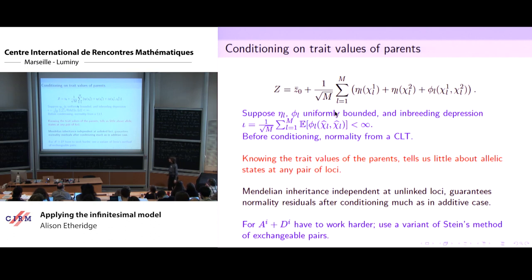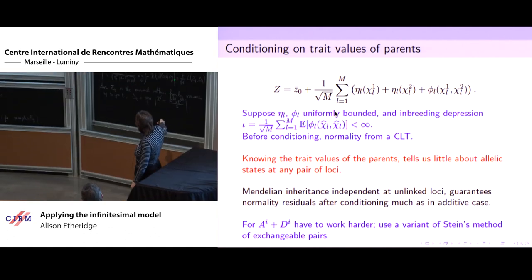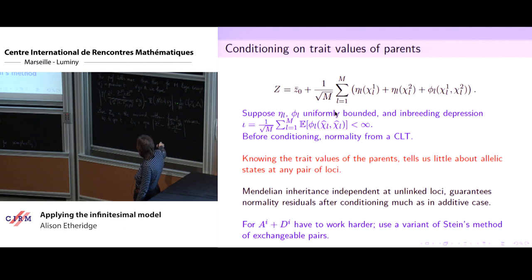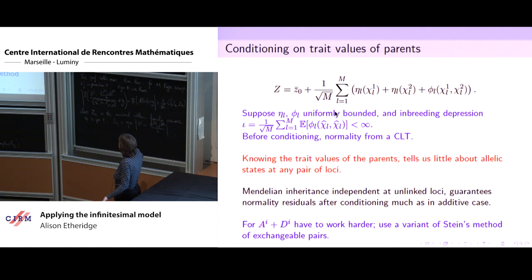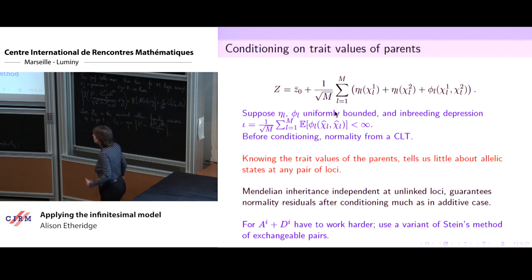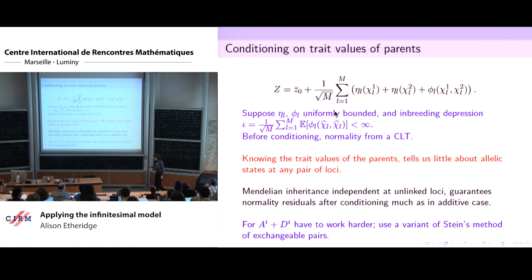For the shared component we have to work much harder, because there is a weak dependence between every pair of loci. For those who care, we use a variant of Stein's method of exchangeable pairs to get bounds in the central limit theorem that are telling us how long the infinitesimal model will be valid for. Showing things are approximately normal isn't difficult, but showing that your model will hold over a number of generations is much harder — this is also dependent on a version of the central limit theorem proved via Stein's method, mercifully by experts on Stein's method, not by us.